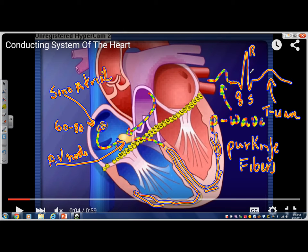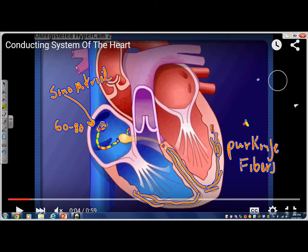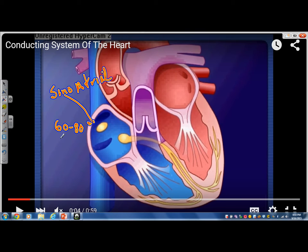A couple of other things real quick. What's the normal pacemaker of the heart? The normal pacemaker of the heart is the SA node. Now you have three potential pacemakers to your heart. You have the sinoatrial node. And that's normal. And the normal rate is 60 to 80.